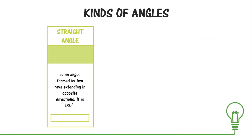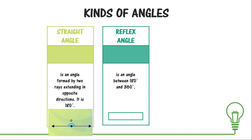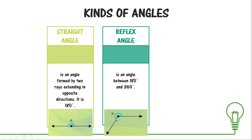The next kind of angle is a straight angle — an angle formed by two rays extending in opposite directions, meaning its measure is exactly 180 degrees. You may refer to the illustration shown in the presentation. The next kind of angle is a reflex angle, which is an angle between 180 degrees and 360 degrees. We can differentiate a reflex angle from acute or obtuse angles by the arrow that determines the rotation — if it's more than 180 degrees, then it is a reflex angle.